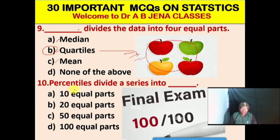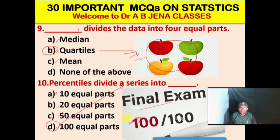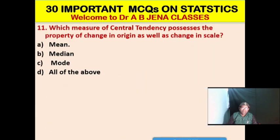Next MCQ — also very interesting: Percentiles divide a series into how many parts? A. 100 equal parts. B. 20 equal parts. C. 50 equal parts. D. 100 equal parts. D is the right option. Percentiles divide a series into 100 equal parts. All the best — I expect you will secure 100 marks out of 100 in the statistics paper.